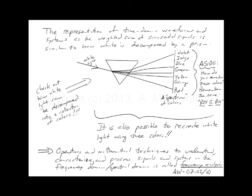White noise is called white because there's equal energy contributions across all frequencies — just like white light. Light — violet, indigo, blue, green, yellow, orange, and red — each color represents light at a specific frequency. If you want to remember that sequence: Roy G. Biv — red, orange, yellow, green, blue, indigo, violet.